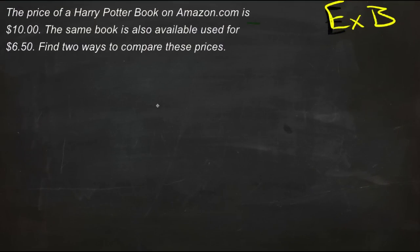The first example in this chapter on ratios is example B in the text, and it says that the price of a Harry Potter book on Amazon.com is $10. The same book is also available used for $6.50, and we need to find two ways to compare the prices.